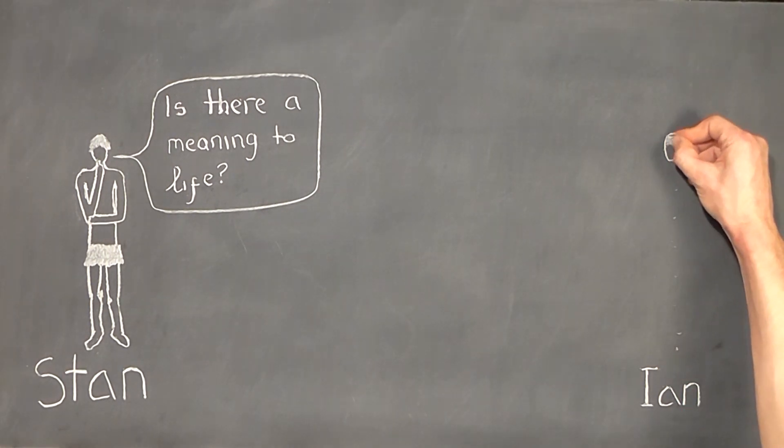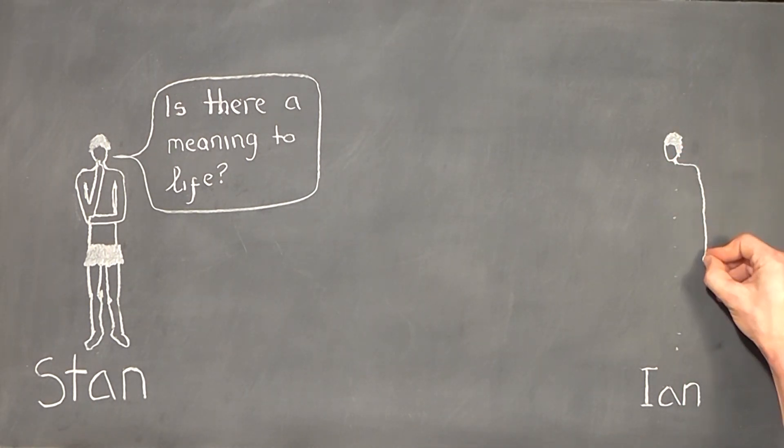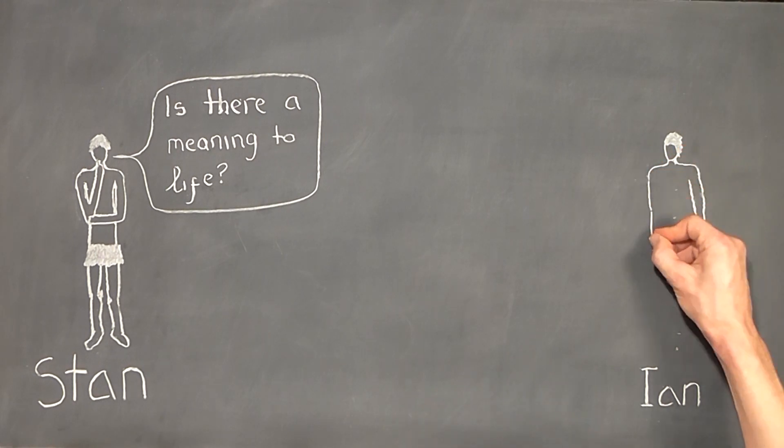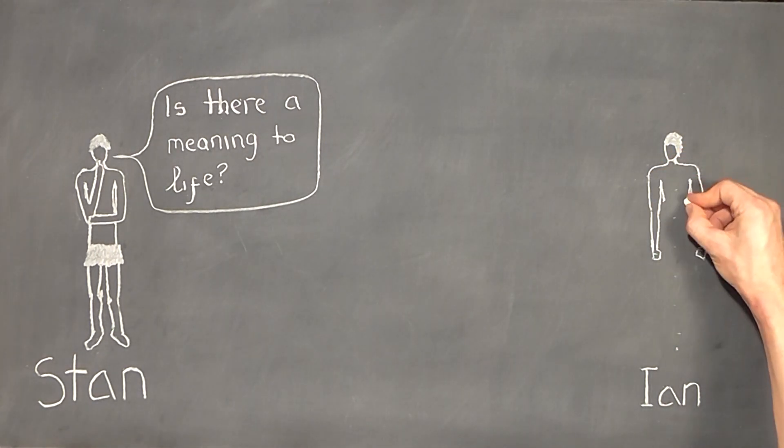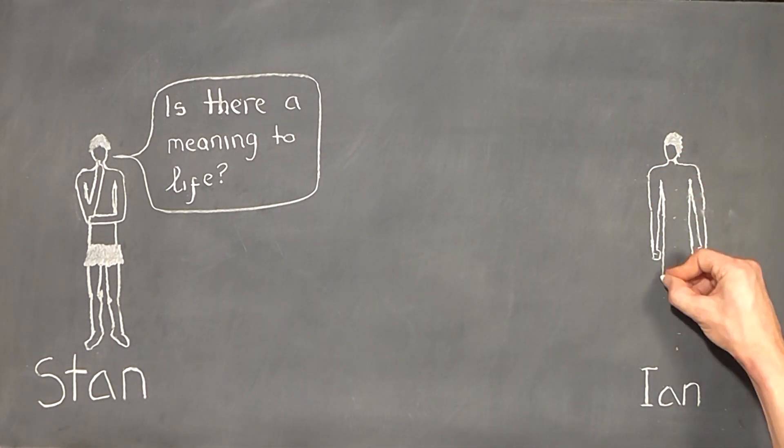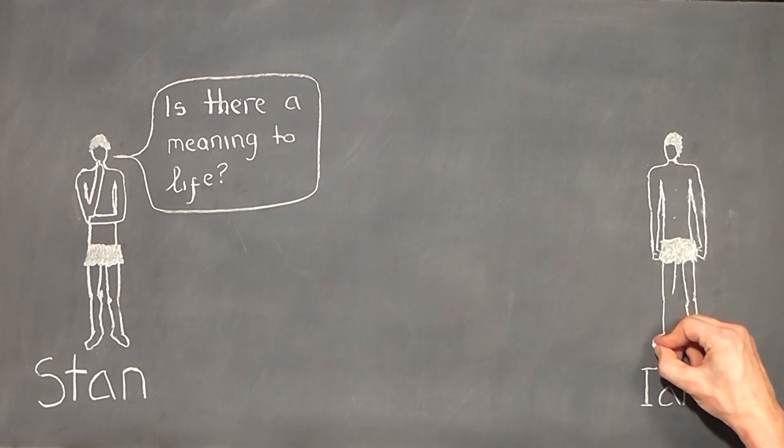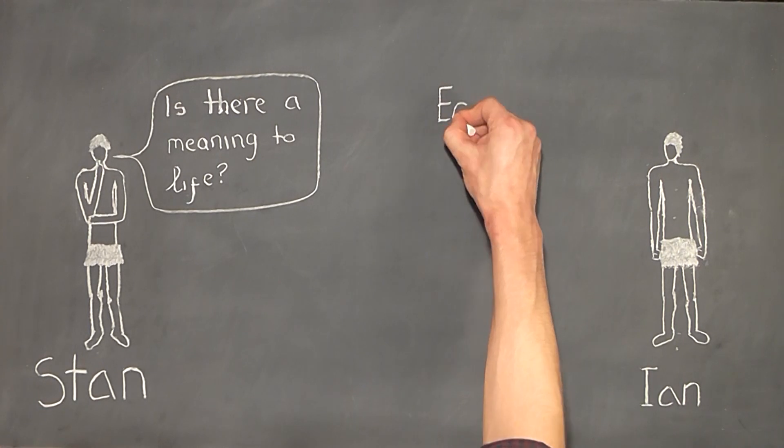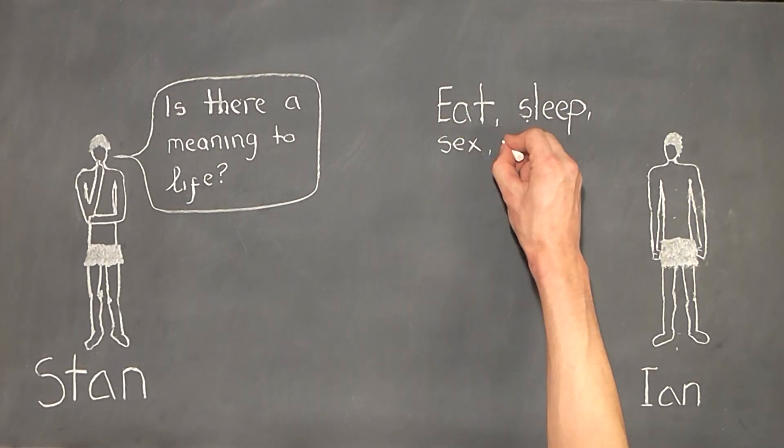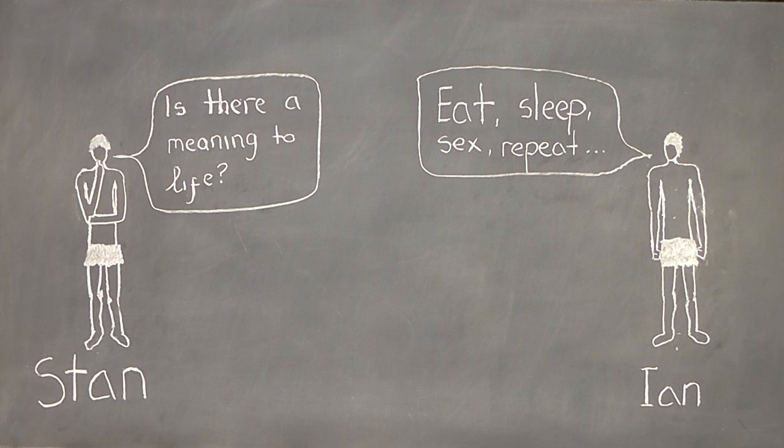By contrast, we have Stan's brother, Instinctive Ian. Ian is, as his name suggests, instinctive and impulsive. He spends little to no time thinking critically. Instead, he relies on instinct and intuition to guide his actions. He develops rule of thumb responses to situations which he applies quickly and without examination. Ian would never dream of spending any time thinking about the shape of the earth.